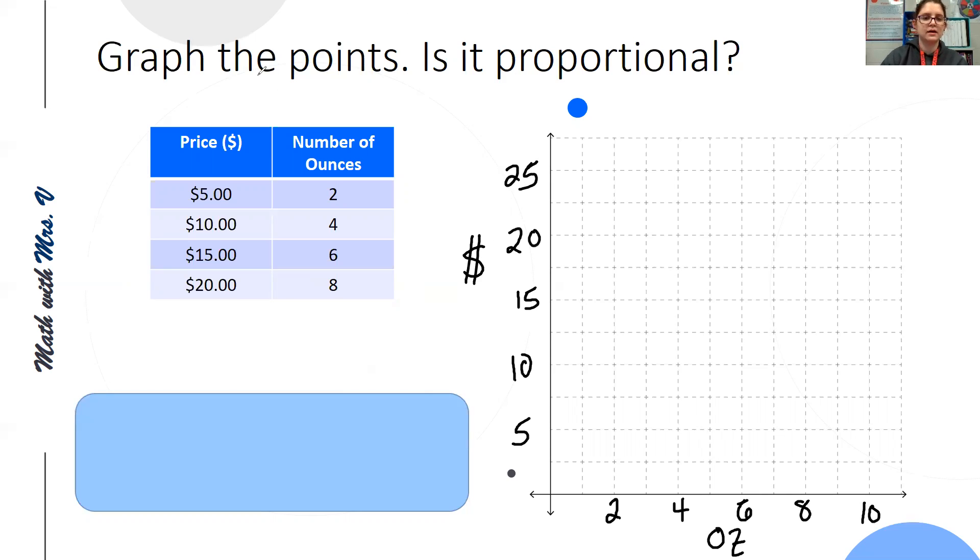Now I'm ready to graph. So I'm going to use purple. So for two ounces, we spent $5. So I'm going to go to two, up to five, and put my point. For four ounces, I spent $10. So over to four, up to 10. Six for 15, 20, and eight.